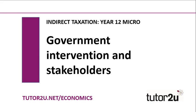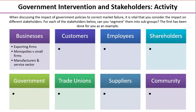It's really important when we are studying the impact and effects of government policies to tackle market failure — in this case we're thinking about indirect taxes — that we really stop to think about the range of stakeholders that are likely to be affected. This is really important not only for our analysis but also when we're starting to think about evaluation. We've got eight key segments of stakeholders: businesses, customers, employees, shareholders, the government, trade unions, suppliers, and the broader community.